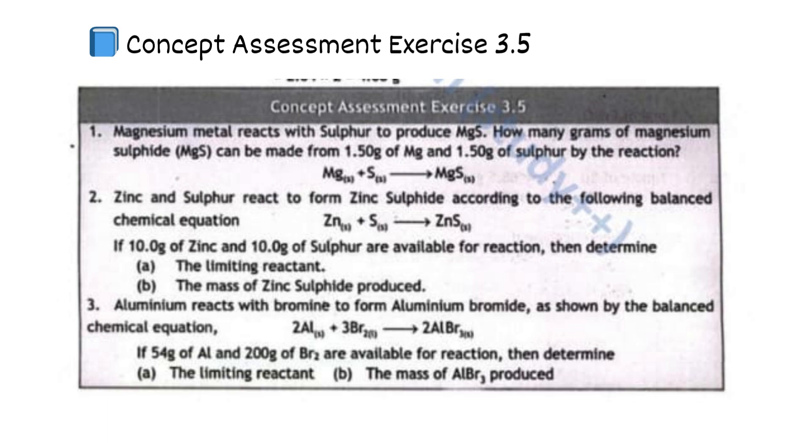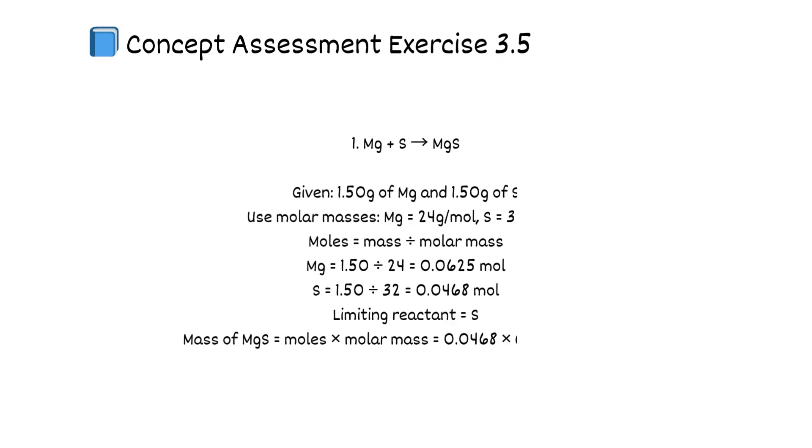Concept Assessment Exercise 3.5, part 1. Mg plus S equals MgS. Given 1.5 grams of Mg and 1.5 grams of S. Use molar masses: Mg equals 24 grams per mole, S equals 32 grams per mole. Moles equal mass divided by molar mass. Mg equals 1.5 divided by 24 equals 0.0625 mol. S equals 1.5 divided by 32 equals 0.0468 mol. Limiting reactant equals S. Mass of MgS equals moles times molar mass: 0.0468 times (24 plus 32) equals 3.00 grams.